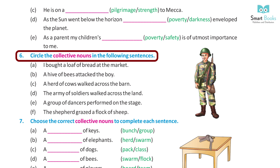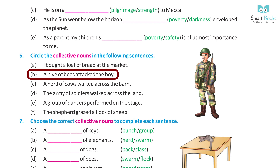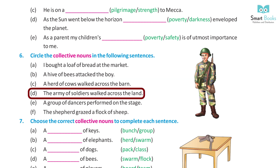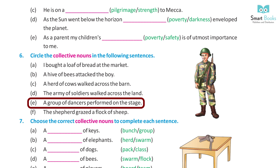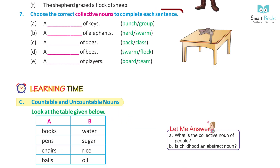Question 6: Circle the collective noun in the following sentences. A) I bought a loaf of bread at the market. Answer: circle loaf. B) A hive of bees attacked the boy. Answer: hive. C) A herd of cows walked across the barn. Answer: herd. D) The army of soldiers walked across the land. Answer: army. E) The group of dancers performed on the stage. Answer: group. F) The shepherd grazed a flock of sheep. Answer: flock.